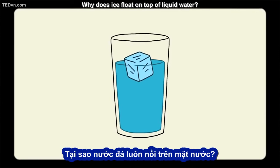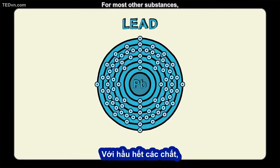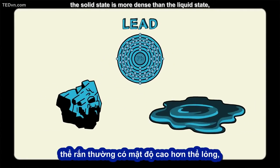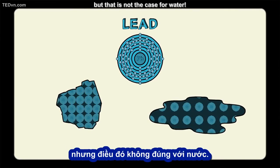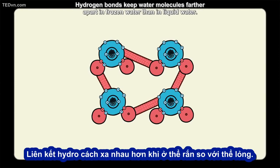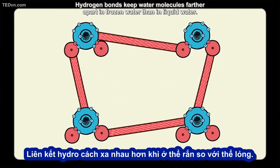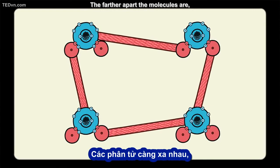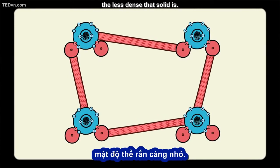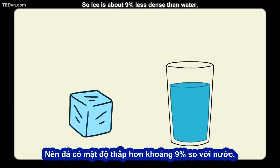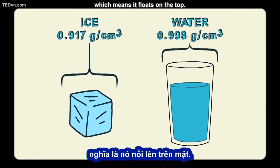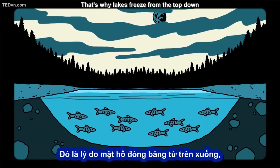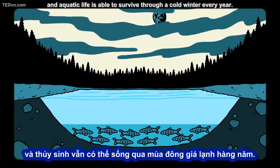Why does ice float on top of liquid water? For most other substances, the solid state is more dense than the liquid state, but that is not the case for water. Hydrogen bonds keep water molecules farther apart in frozen water than in liquid water. The farther apart the molecules are, the less dense that solid is. So ice is about 9% less dense than water, which means it floats on the top. That's why lakes freeze from the top down and aquatic life is able to survive through a cold winter every year.